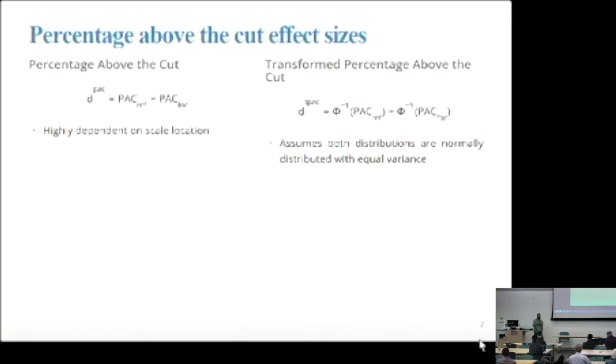So one of the things, at least in educational research, that people have been doing is when they're interested in group differences at other points in the scale, they've been basically making a cut point on the scale. Here's 150 on the scale, and then they'll look at the differences between those two groups in terms of the percentage that are scoring above that cut point. This is actually really problematic, because it really depends on scale location. At one point, it might look like a really big difference between the groups, and at a different point, it might look like there's no difference. So Andrew Ho and colleagues proposed this one on the right, which is the transformation of that, where you're basically just taking those probabilities and transforming them into normal standard deviation units. This works pretty good, assuming both distributions are normally distributed.